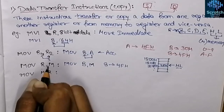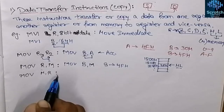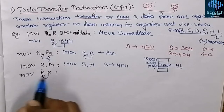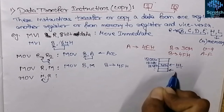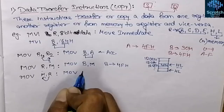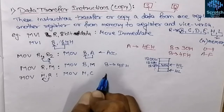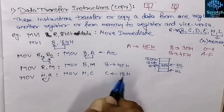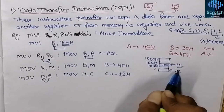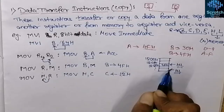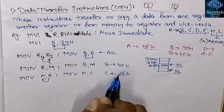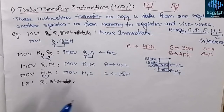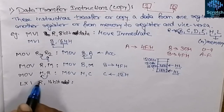The next instruction is MOV M, r, which is the reverse of MOV r, M. It copies the data byte from a register into the memory location specified by the HL pair. For example, MOV M, C — if register C contains 12H, then executing this instruction stores 12H at the memory location currently pointed to by the HL pair.